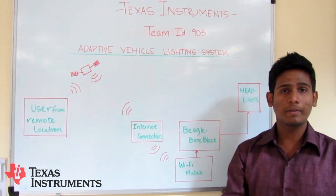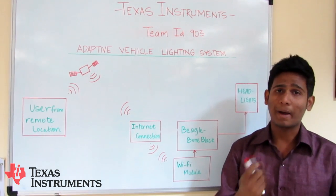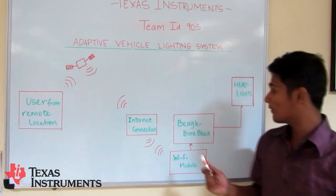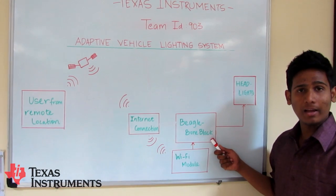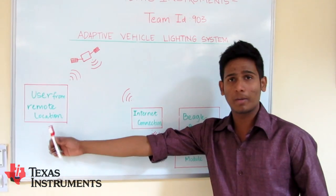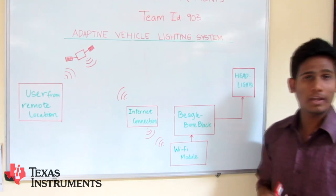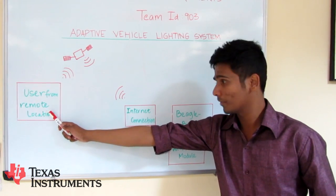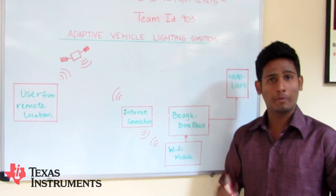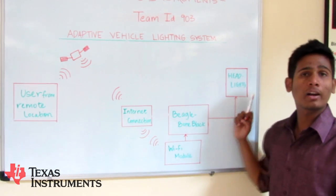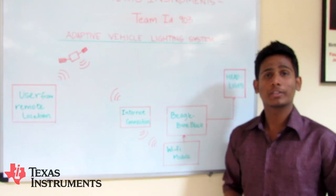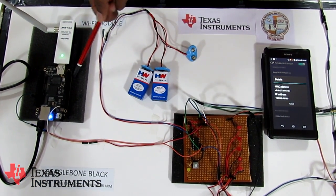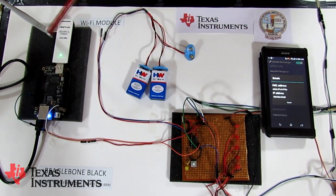Our third feature is a very convenient one for the remote user. Suppose you are in a parking lot and you are unable to find your vehicle — we propose a solution to this problem. We are using a BeagleBone Black controlled by a user from a remote location to control the headlights of the vehicle. A WiFi module is connected to the BeagleBone Black and is remotely operated by the user. All the user has to do is run a code on their phone, and the headlights are controlled by SecureShell protocol, one of the safest modes to communicate.